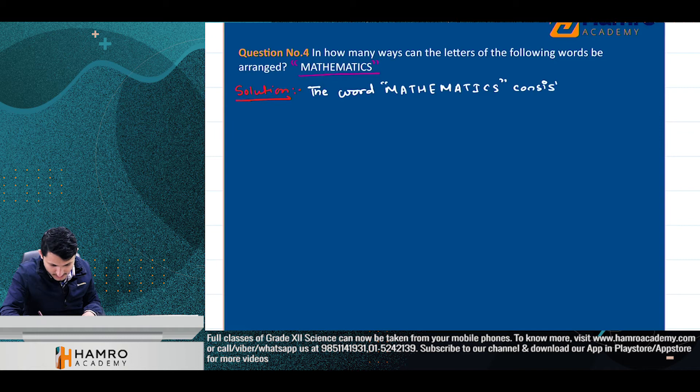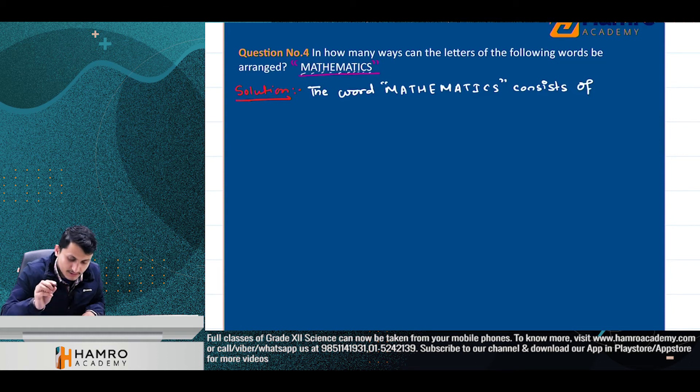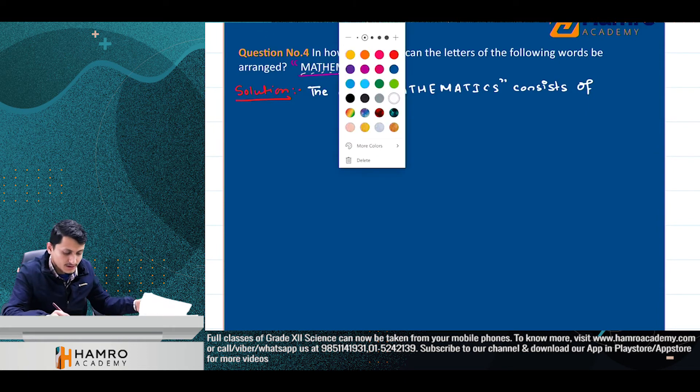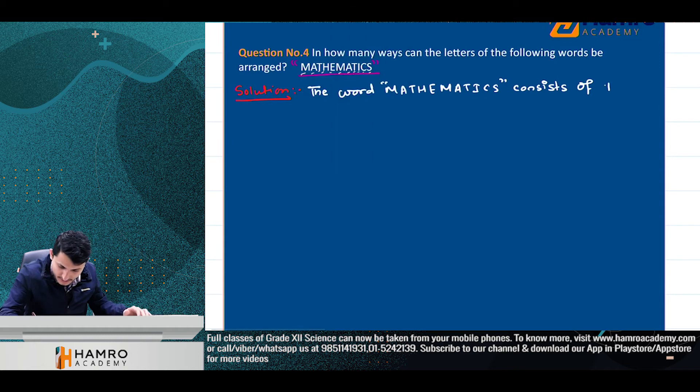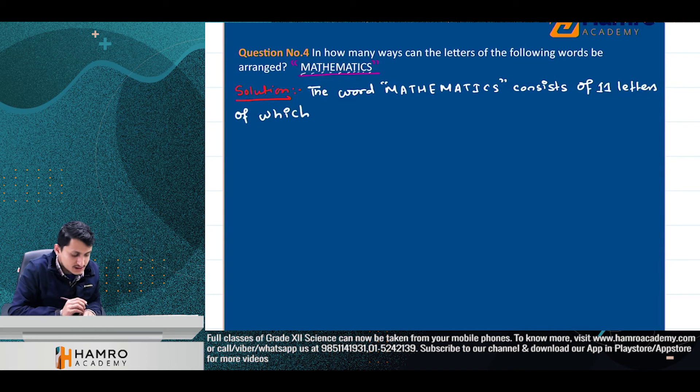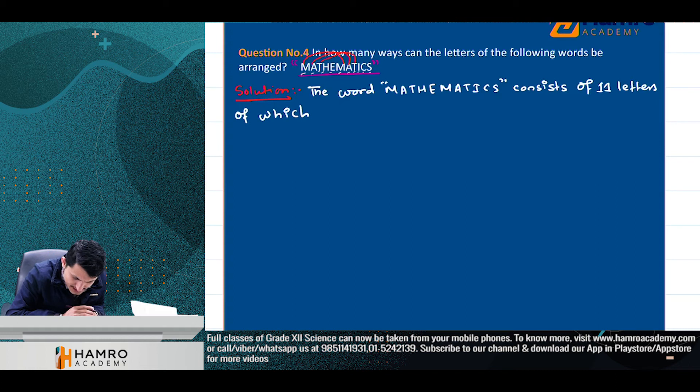The word MATHEMATICS consists of - let me count - one, two, three, four, five, six, seven, eight, nine, ten, eleven letters. It consists of eleven letters. Total number of letters is eleven. Of which, some letters repeat. Which ones repeat? M repeats, A repeats, T repeats.